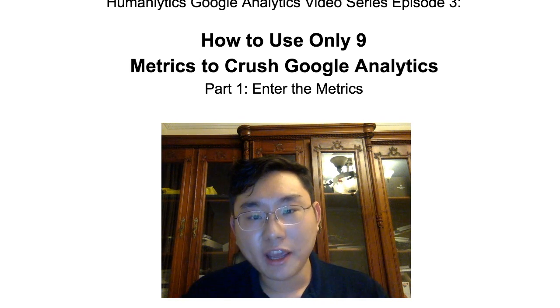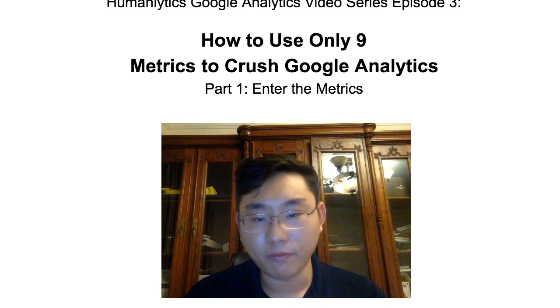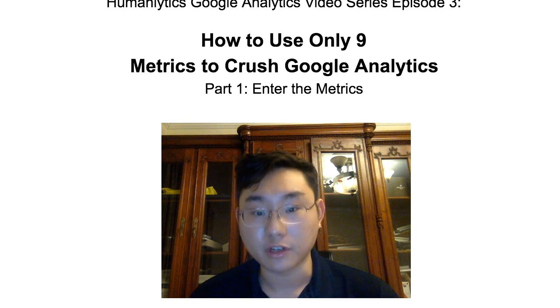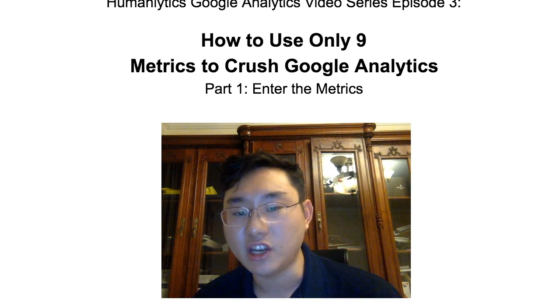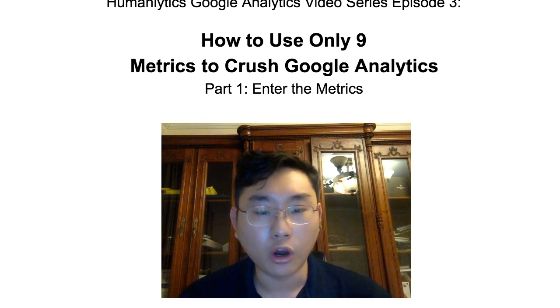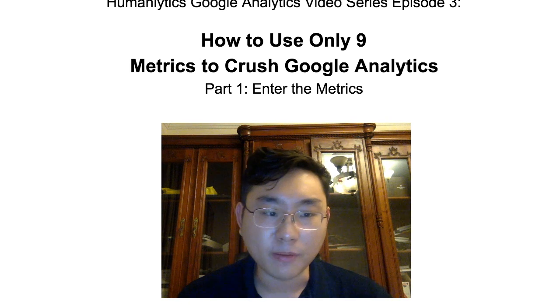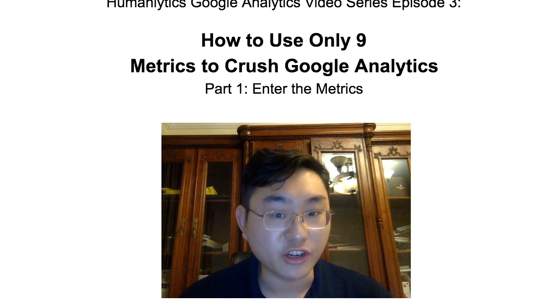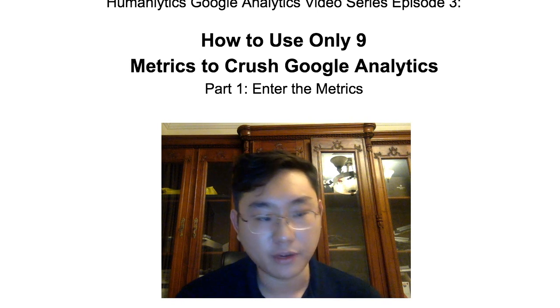Before talking about Google Analytics metrics, I think it will be helpful to talk about what makes a good metric in the first place. In HumanLytics, we like to conduct three sanity checks for all metrics that are going through our head, to determine whether these metrics are legitimate metrics that can help us towards the goal that we're trying to achieve.